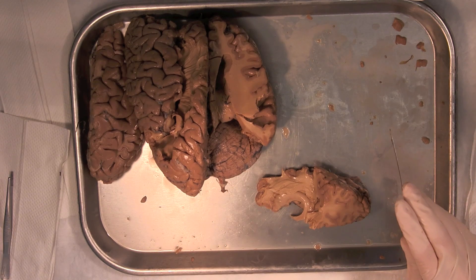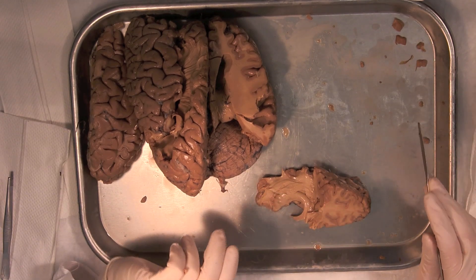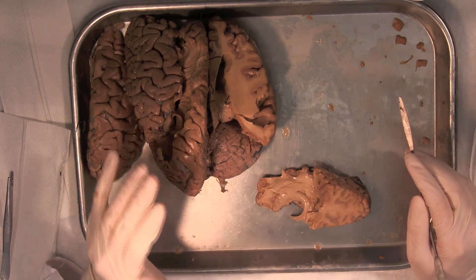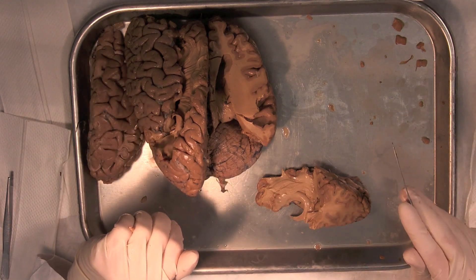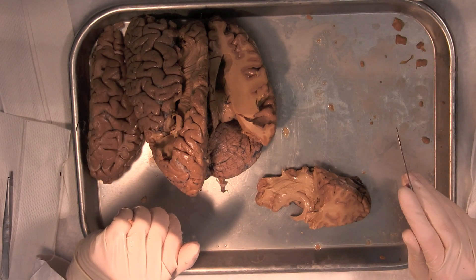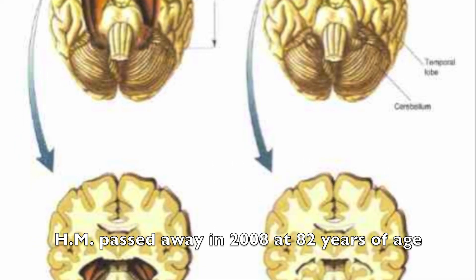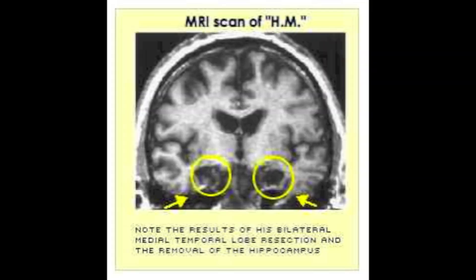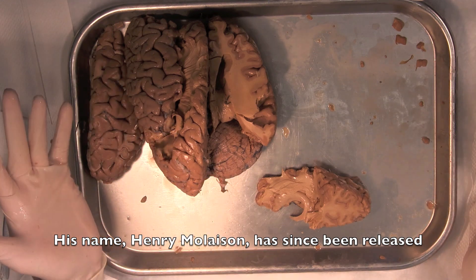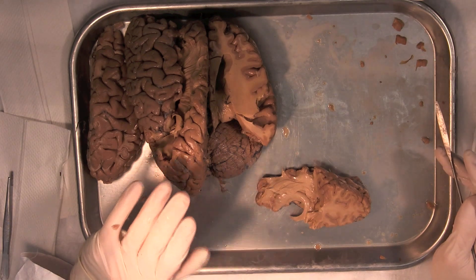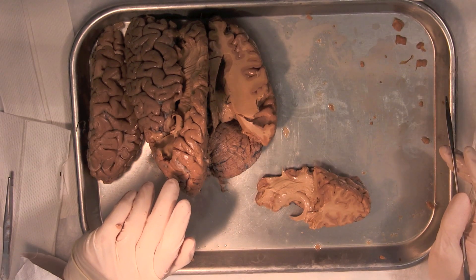Without the hippocampus, you can't make new declarative memories, but you can still recall old ones. This is important because people with damage to the hippocampus remember events prior to the damage just fine, but they don't remember anything after their hippocampus was damaged. Patient H.M. is a very famous example of this — he had his hippocampus surgically removed to reduce his severe epilepsy. After the surgery, he could only hold things in short-term memory, but was unable to store new long-term memories.